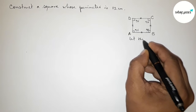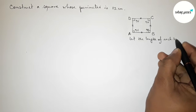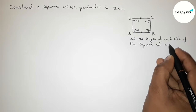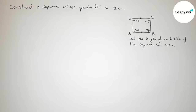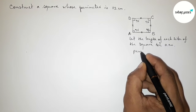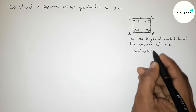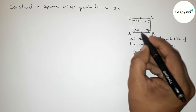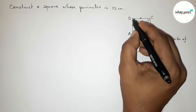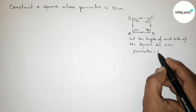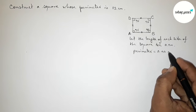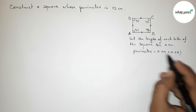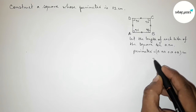Let the length of each side of this square be 'a' centimeters. Now finding the perimeter: the perimeter equals the sum of all sides, which is a + a + a + a centimeters.